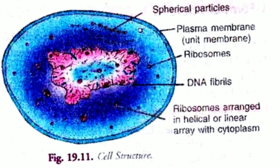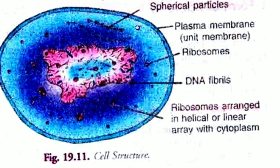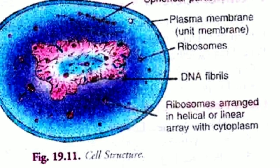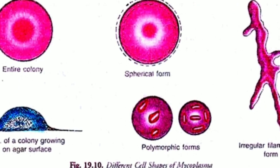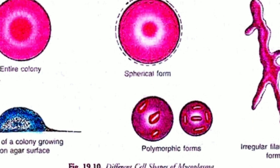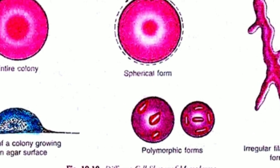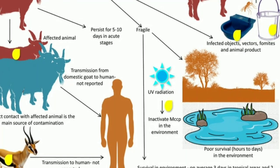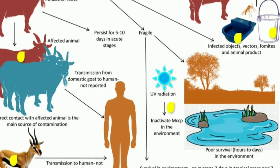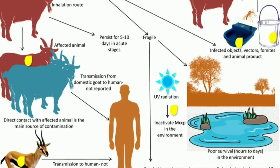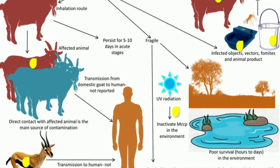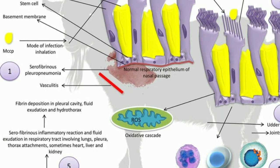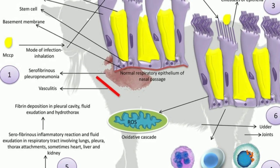Third, infertility in humans is caused by three mycoplasma species. Fourth, Mycoplasma dispar is an etiological agent of bronchopneumonia in cows. Fifth, Mycoplasma gallisepticum and Mycoplasma meleagridis cause respiratory disease in domestic poultry, and the disease causes substantial losses in poultry production.